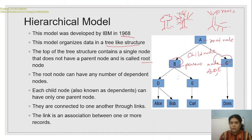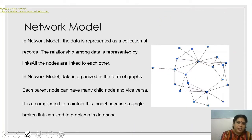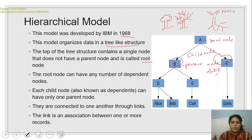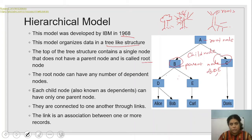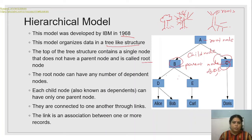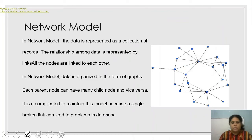The main disadvantage of the hierarchical model is that it is very complex to design. Also, there is no link between one node and another node at the same level — node C cannot have a link with node B or its children — making this model not very feasible.